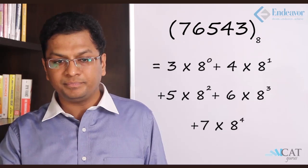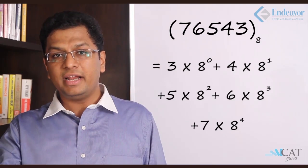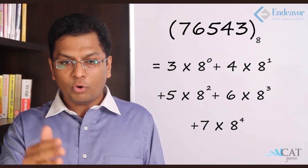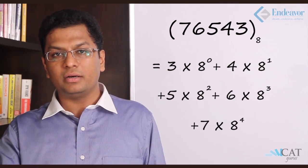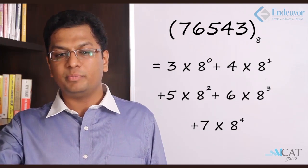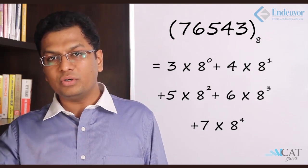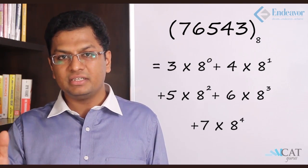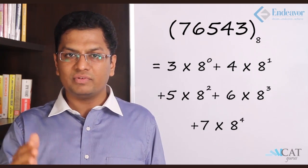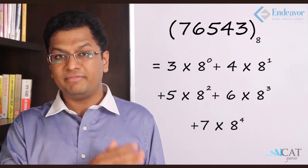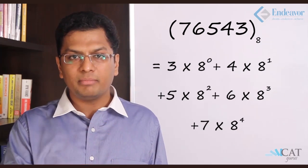Now let's apply this to 76543 on base 8. Starting from the rightmost digit: 3 × 8⁰, then 4 × 8¹, then 5 × 8², and so on. Counting from the right, the first position is power 0 and the power increases by 1 at each step. This is how any number in any base is represented positionally.